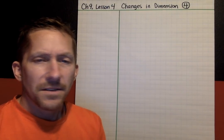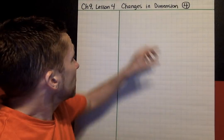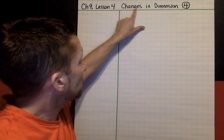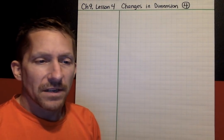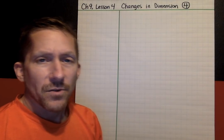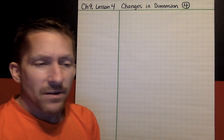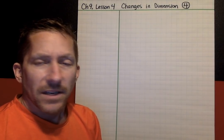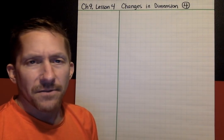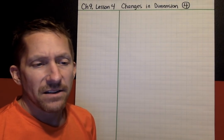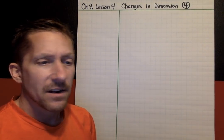Hi boys and girls, this is chapter 9, lesson 4. In this lesson we're going to talk about changes in dimension. We're also going to learn a new word, or review a word that you might know, perimeter. We're going to look at what happens when you change the dimensions of a figure, what happens to the area of that figure, what happens to the perimeter of that figure.